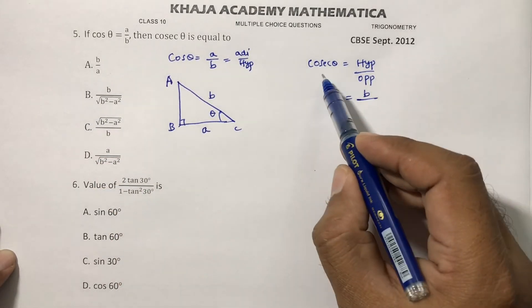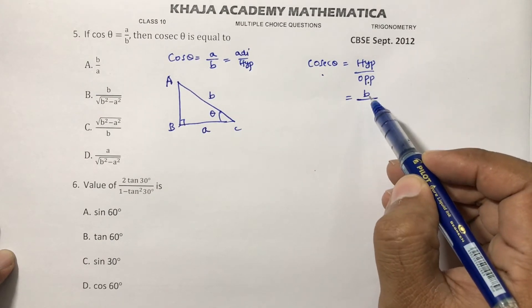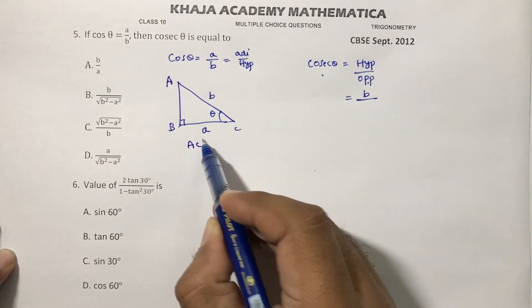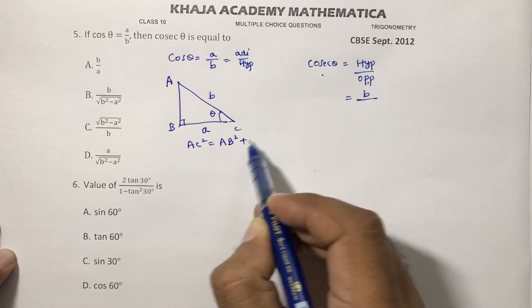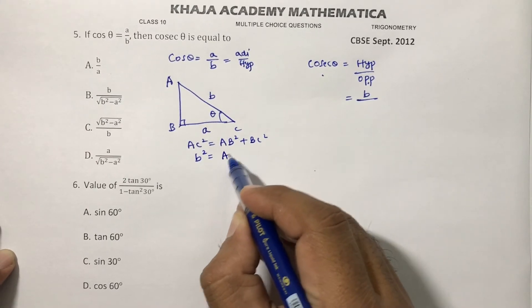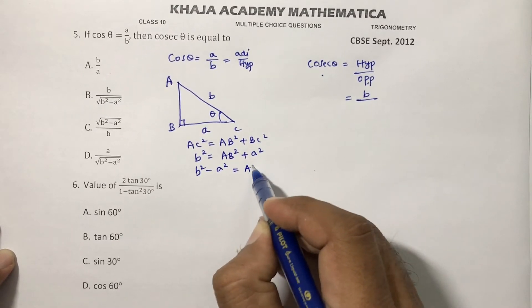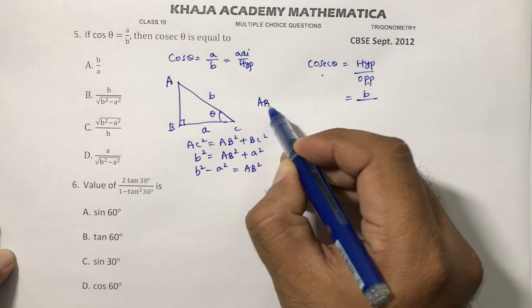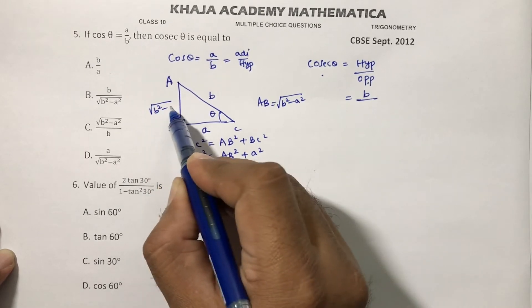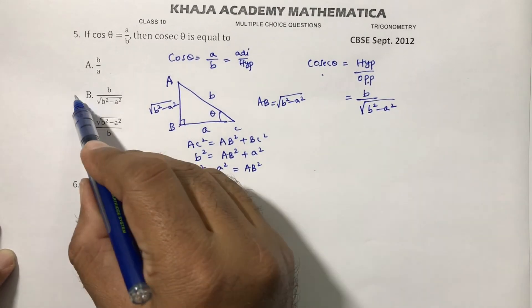Apply Pythagoras theorem: AC squared equals AB squared plus BC squared. So B squared equals AB squared plus A squared, giving B squared minus A squared equals AB squared. Therefore AB equals root of B squared minus A squared, so opposite is root B squared minus A squared, and cosec theta equals B over root B squared minus A squared. The correct option is B.